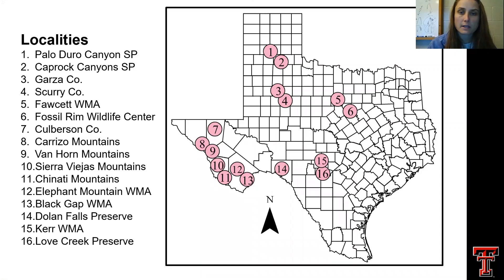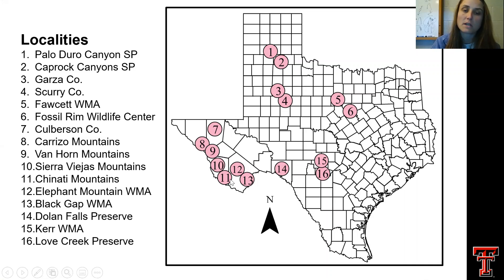This map shows a geographic sampling of all the Aoudad in this study. In the north, we have Palo Duro Canyon State Park as well as Caprock Canyon State Park. In the east, we have Fossil Rim Wildlife Center. In the hill country area, we have Kerr WMA as well as Love Creek Preserve. And then in west Texas, various mountain ranges in the Trans-Pecos region.